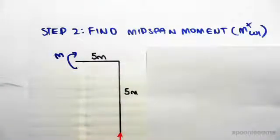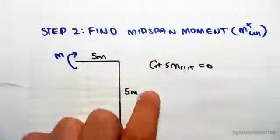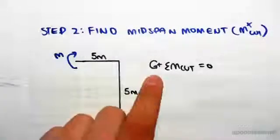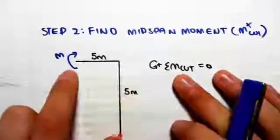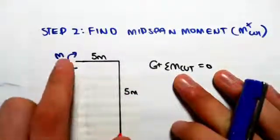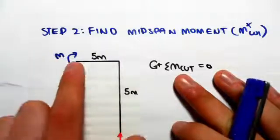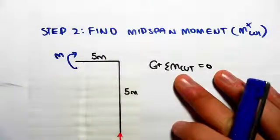You still need to use the same definition of anticlockwise as positive. Just keep that to make it simpler. But you need to make sure that the direction of the moment in your diagram, when you cut on the opposite side, is opposite to what you did when you're cutting on the left hand side.